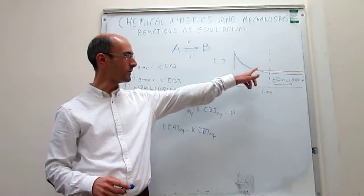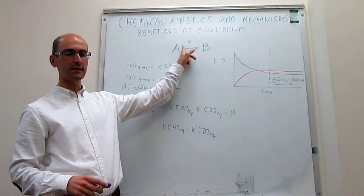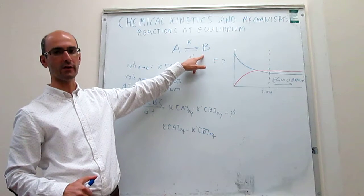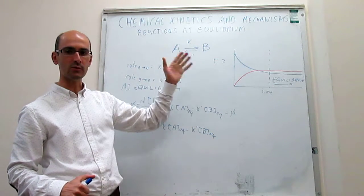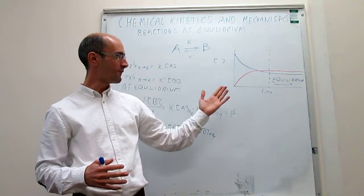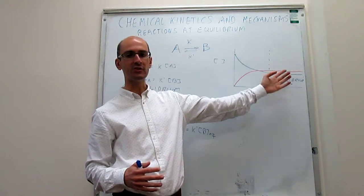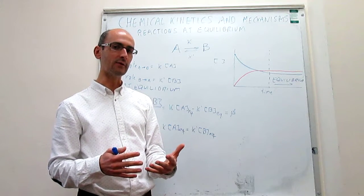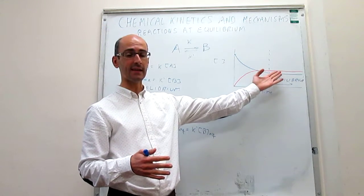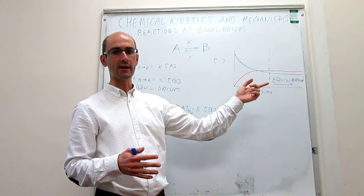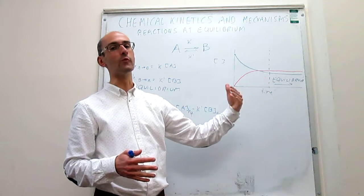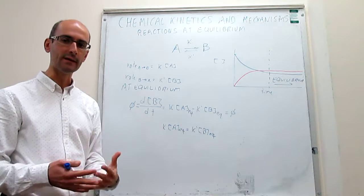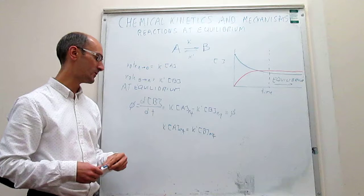You reach equilibrium when the rate of the reaction generating a product is identical to the rate of the reaction removing product. That is when you actually get to equilibrium. From a microscopic perspective, it looks like the concentration of B is not changing because the reaction stops, but at the microscopic level the reaction is still taking place — the rate forming B is identical to the rate removing B. Microscopically, the concentration of B does not change at all.